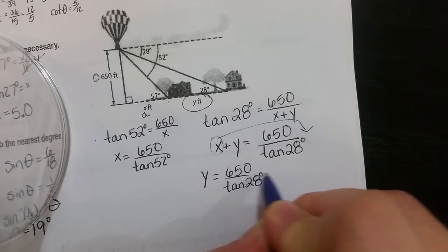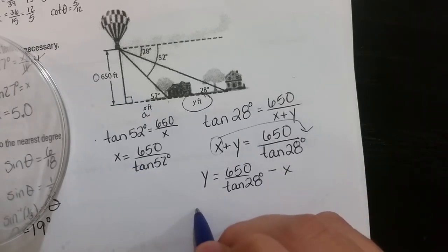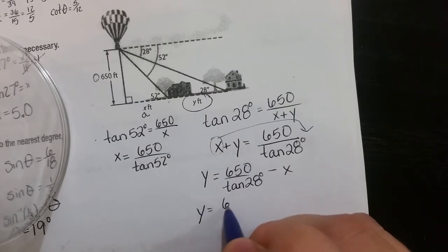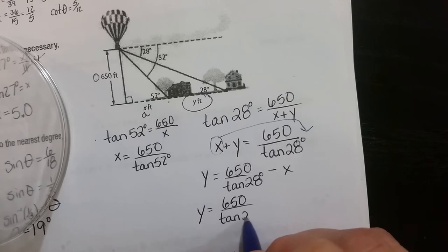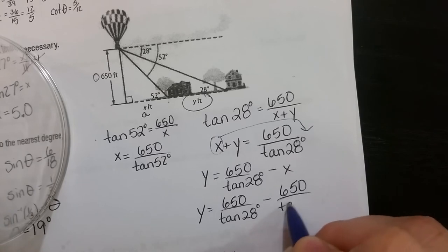Well, we already know X equals this. So Y is going to equal 650 over tan 28 minus 650 over tan 52.